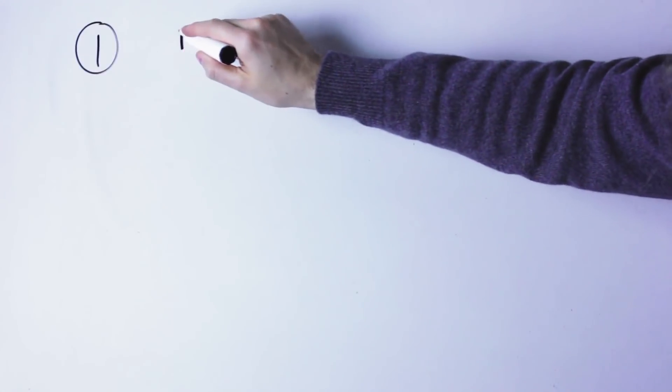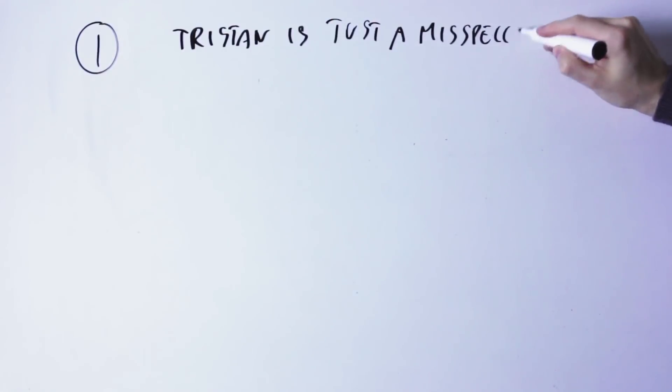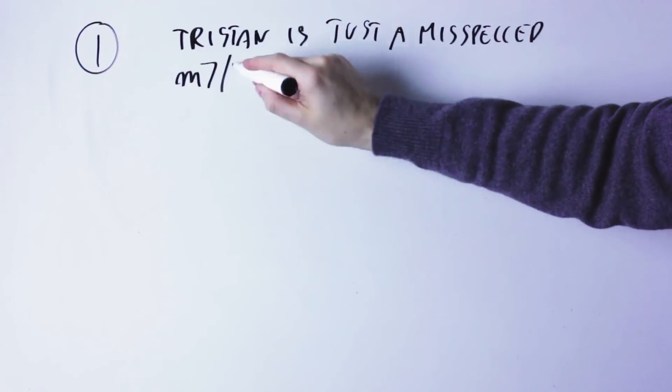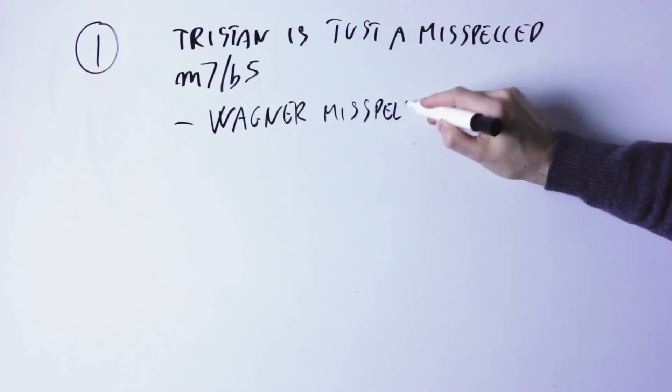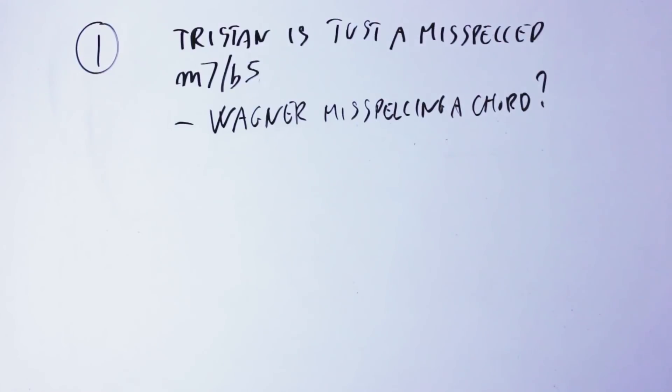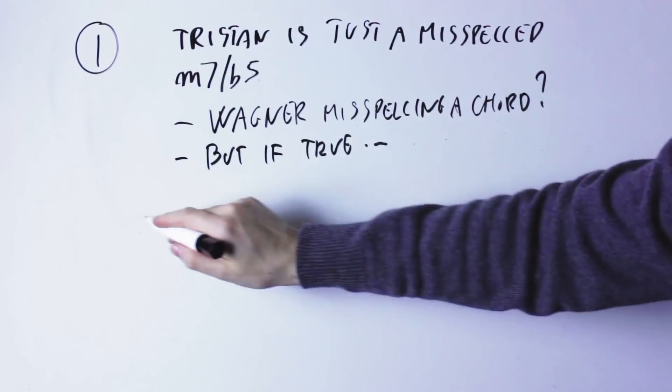Explanation number one, the Tristan chord is just a minor 7 flat 5 chord, and Wagner misspelled it. I find it really unlikely that Wagner misspelled such a chord. But if it is, if this is just an F minor 7 flat 5...